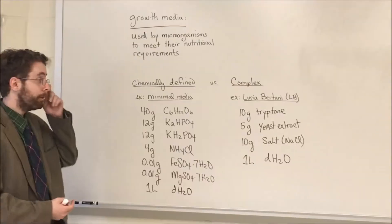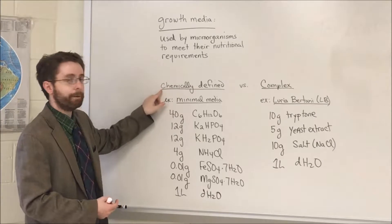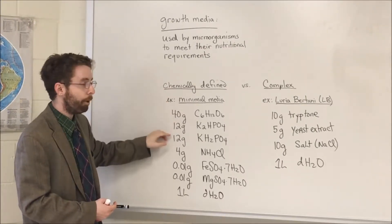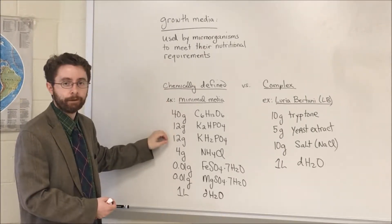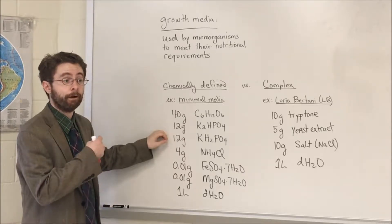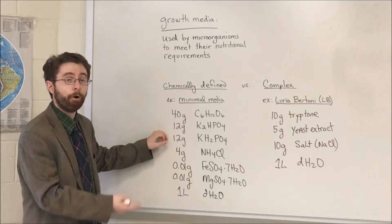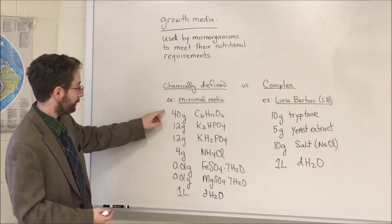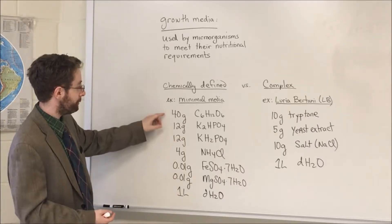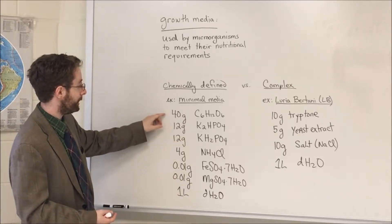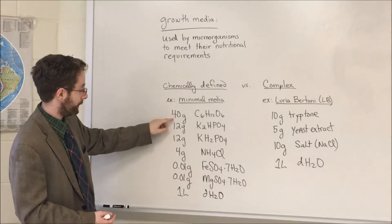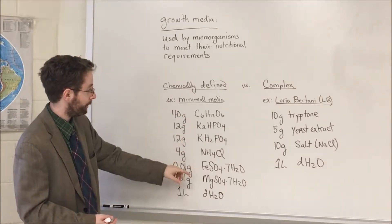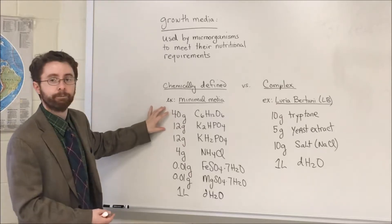One type is called chemically defined, where every single component that goes into that media is known — both the component as well as its concentration. So if I look at this recipe here of minimal media, we can see both the amounts as well as every single component that goes into making this media.